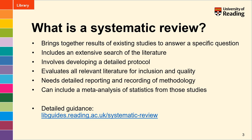A systematic review is usually seeking to answer a specific question by looking at the results of existing studies published in the literature. It includes an extensive search to find relevant studies and involves developing a detailed protocol so that you can judge the relevance of those studies. It then evaluates all the relevant literature for inclusion and for quality and includes a detailed write-up and recording of the methodology so that somebody else could come along and repeat that search and get the same results. A systematic review may also include a meta-analysis of the statistics taken from those studies.